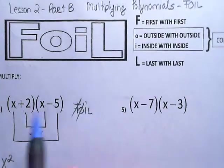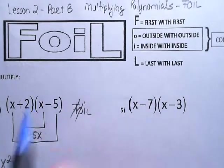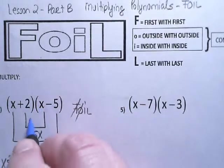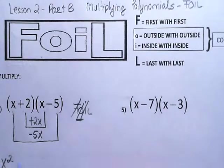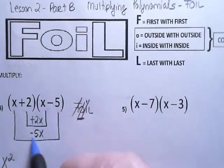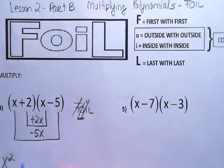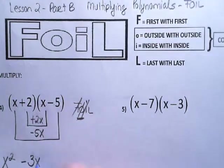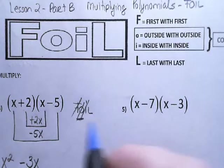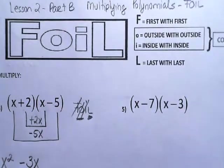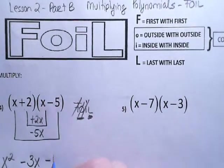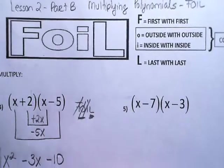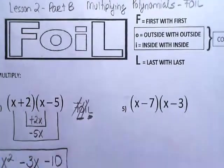The I stands for the inside times the inside. So positive 2 times x is positive 2x. Now once you do these two — the O and the I — you're going to combine them. So negative 5 plus 2 gives you negative 3x. And the last one is L, so it's last times last. 2 times negative 5 gives you negative 10. And that's how you multiply binomials using FOIL.